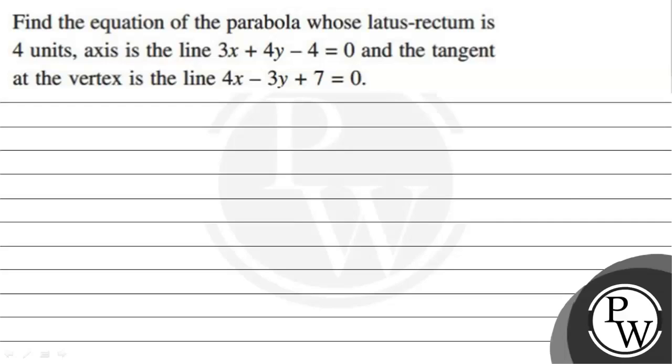Hello Pachong! Let's read the given question. Find the equation of the parabola whose latus rectum is 4 units, axis is the line 3x + 4y - 4 = 0, and the tangent at the vertex is the line 4x - 3y + 7 = 0.